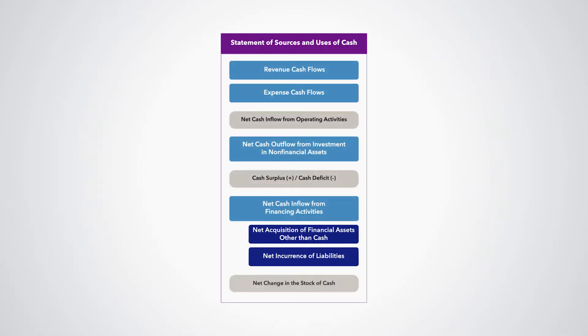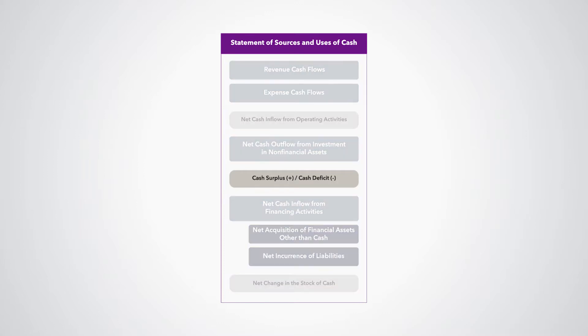The two main balancing items derived in this statement are the cash surplus/deficit and the net change in the stock of cash.